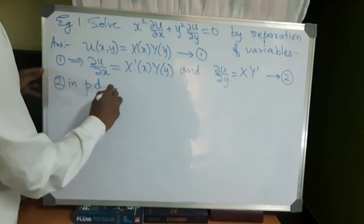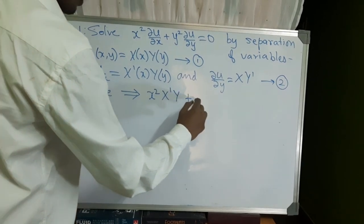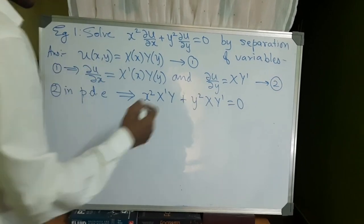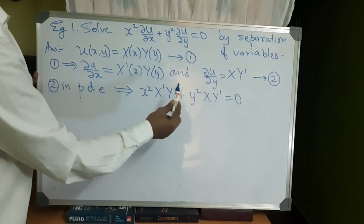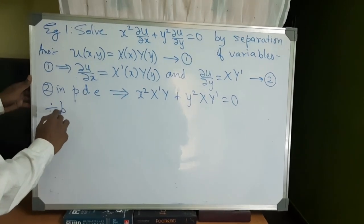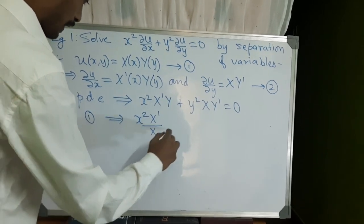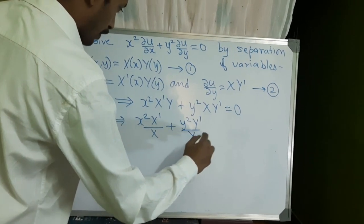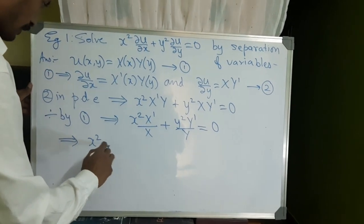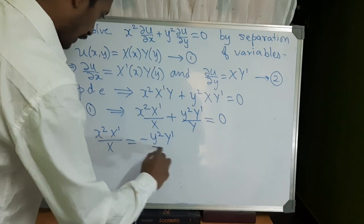Substituting equation 2 into the PDE gives x²·X'·Y + y²·X·Y' = 0. Now we need to separate the x variables from the y variables, so we divide by X·Y. We get x²·X'/X + y²·Y'/Y = 0, which simplifies to x²·X'/X = −y²·Y'/Y.